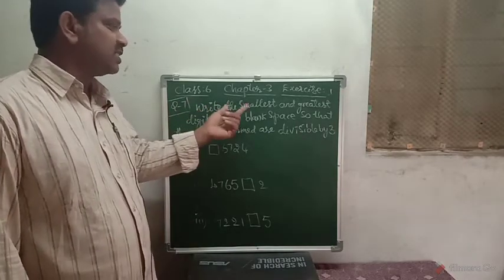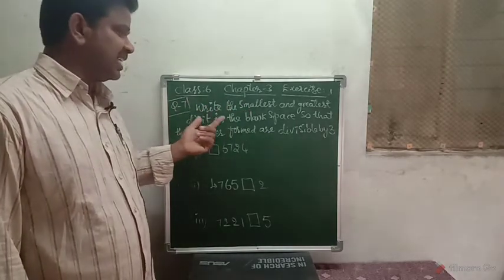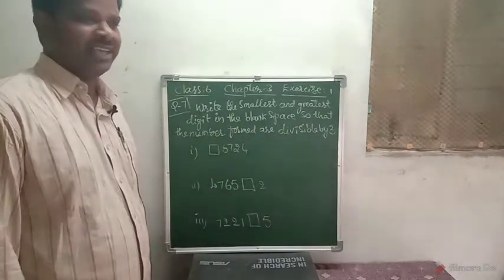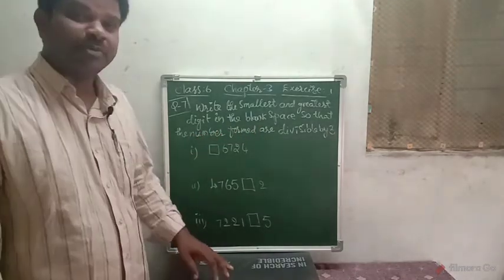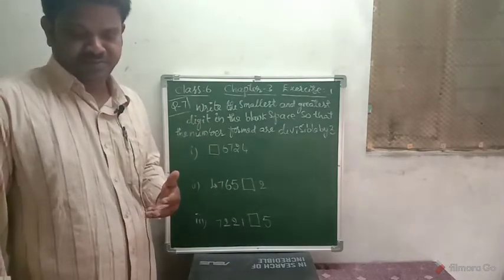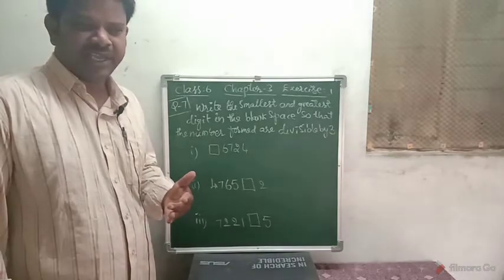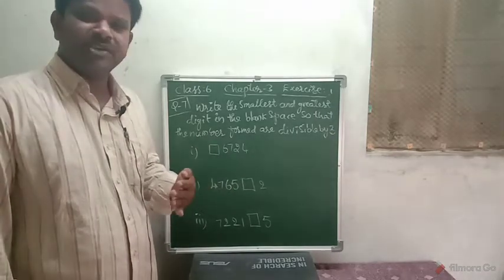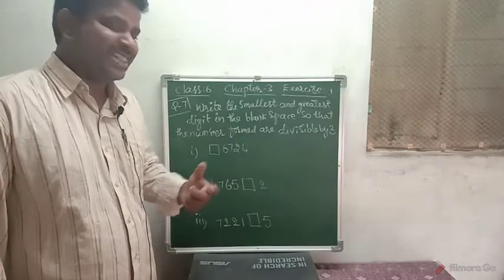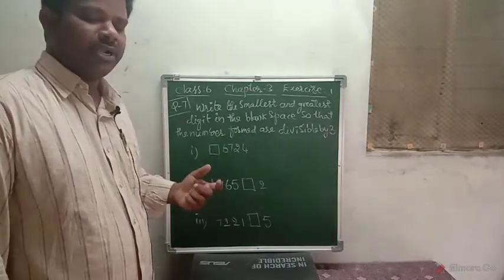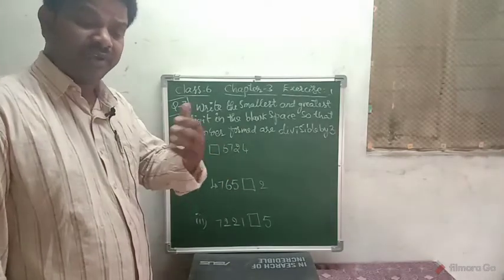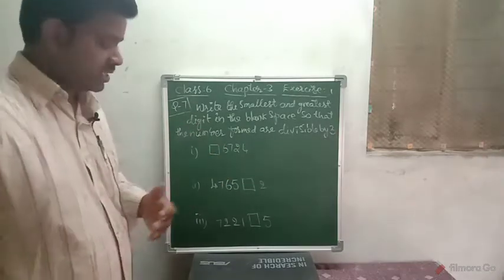We will consider question number 4: Write the smallest and greatest digit in the blank space so that the number formed is divisible by 3. We already learned about divisibility by 3. The divisibility test for 3 is: if the sum of digits of a given number is a multiple of 3, then that number is divisible by 3.